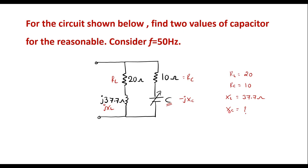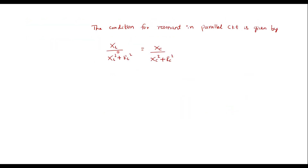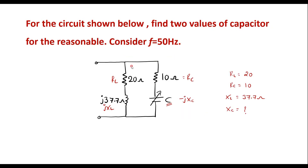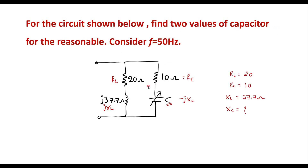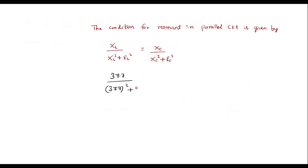Once we find XC, we can easily find C. We will try to find XC first. Substituting XL value of 37.7: 37.7 divided by (37.7 squared plus RL squared, where RL is 20, so 20 squared) is equal to XC divided by (XC squared plus RC squared, where RC is 10, so 10 squared).